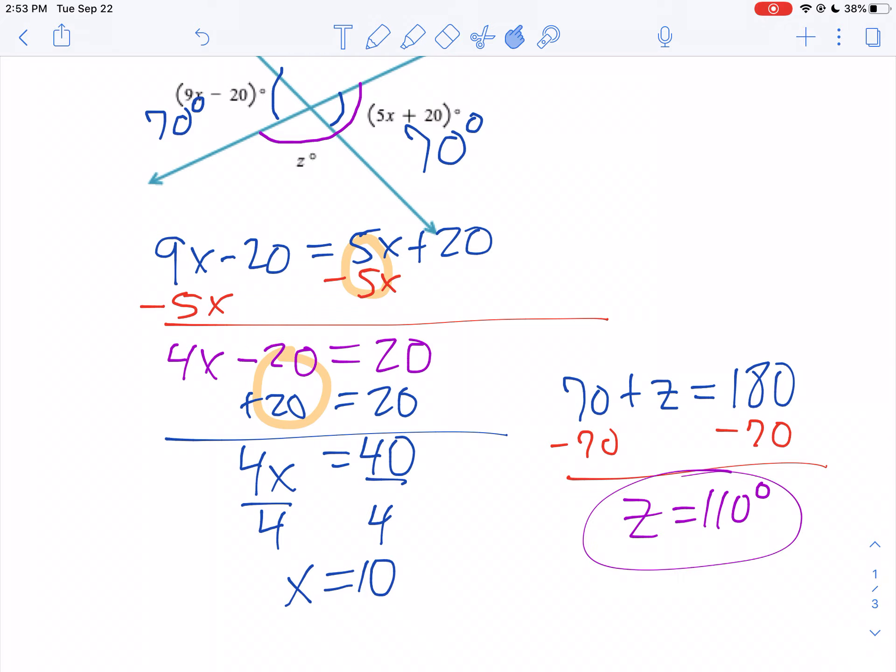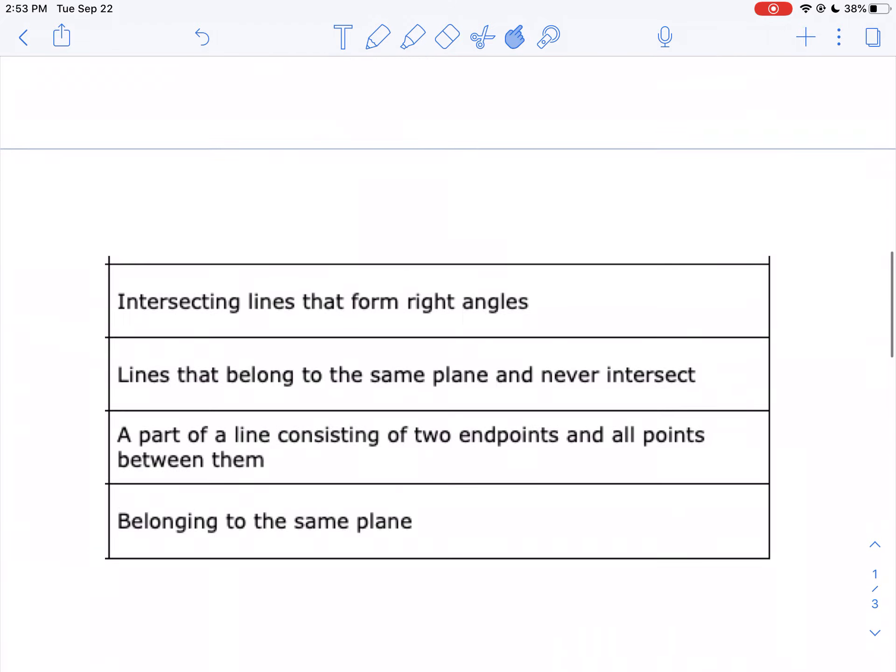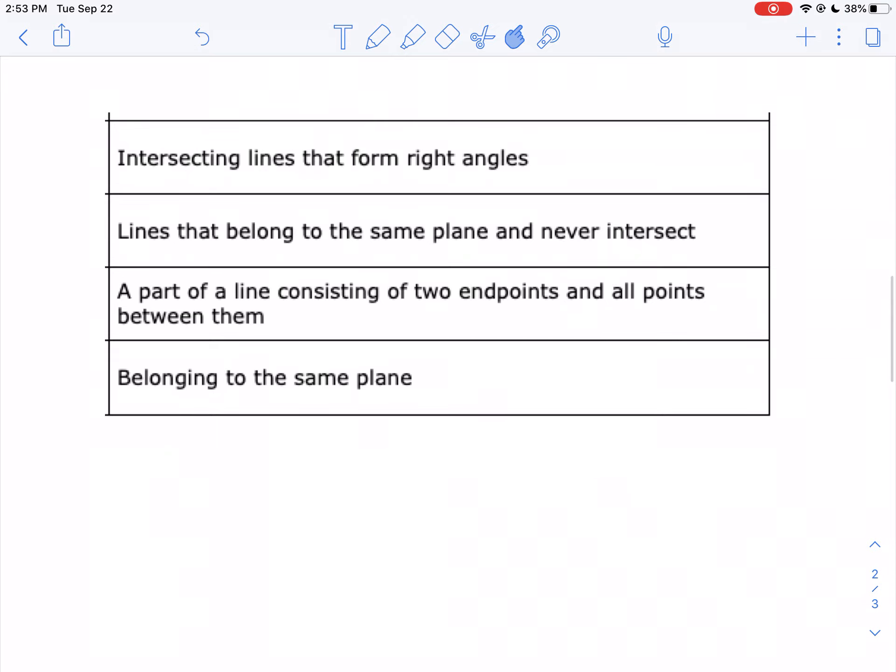Also on your affirmation, you had some vocabulary words that you got a little mixed up on. So let's go over these right now. Intersecting lines that form right angles are perpendicular. Lines that belong to the same plane and never intersect are called parallel.